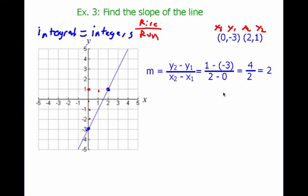So either way we want to do this, by applying our formula or by simply counting spaces, we still get a slope of 2.